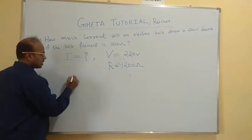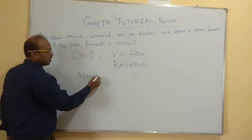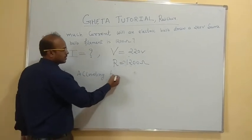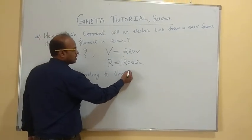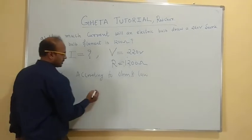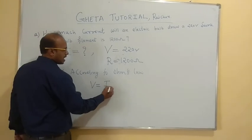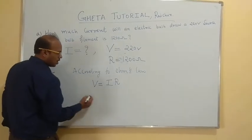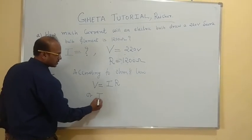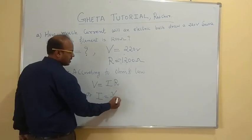So we know according to Ohm's law, V is equal to IR. Or we can write that I is equal to V by R.